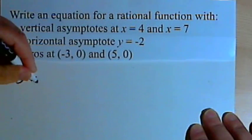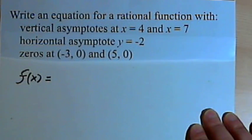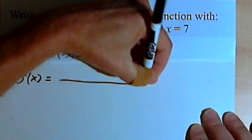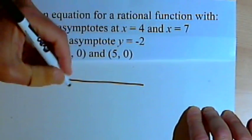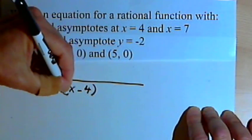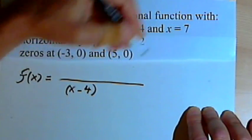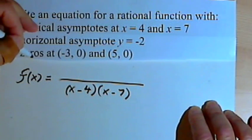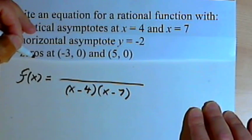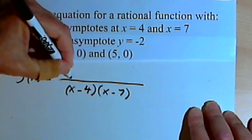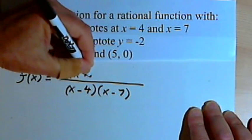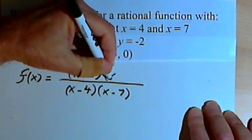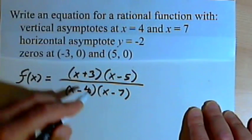This is pretty much the same process. We'll call the function f of x and find the factors for the denominator by looking at the vertical asymptotes. I've got a vertical asymptote at x equals 4, so I want x minus 4 in the denominator, and a vertical asymptote at x equals 7, so I also want x minus 7. For the numerator, a zero at negative 3 comma 0 gives x plus 3, and a zero at 5 comma 0 gives x minus 5.